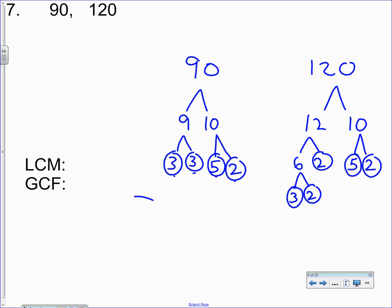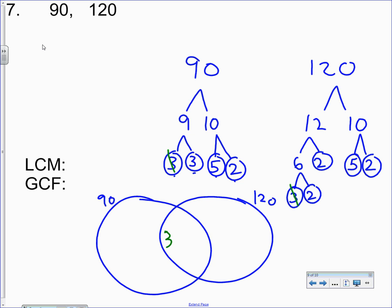Now, the tricky part of Venn diagram. This really is pretty cool. Once you get the hang of this, it's great. 90 on one side, 120 on the other side. Look for what they have in common. I see that the 90 has a three and the 120 has a three. So I'll put a three in the middle. The 90 has a five. The 120 has a five. I'll put a five in the middle. The dot means times. I see a two on the 90 side and a two on the 120 side. And I believe that is it for what they have in common.